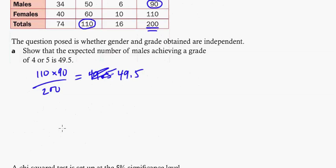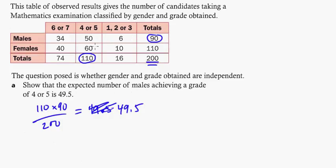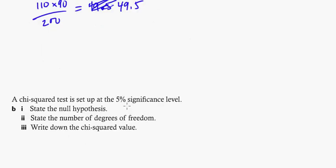So what's the next question? A chi-square test is set up at a 5% significance level, state the null hypothesis. Well, in this case, what are we talking about here? We're talking about gender, and we're talking about their results, their grades. So the null hypothesis, you just put H sub 0 equals gender and the grade awarded are independent. So we are going to go through and prove this, that they're independent.